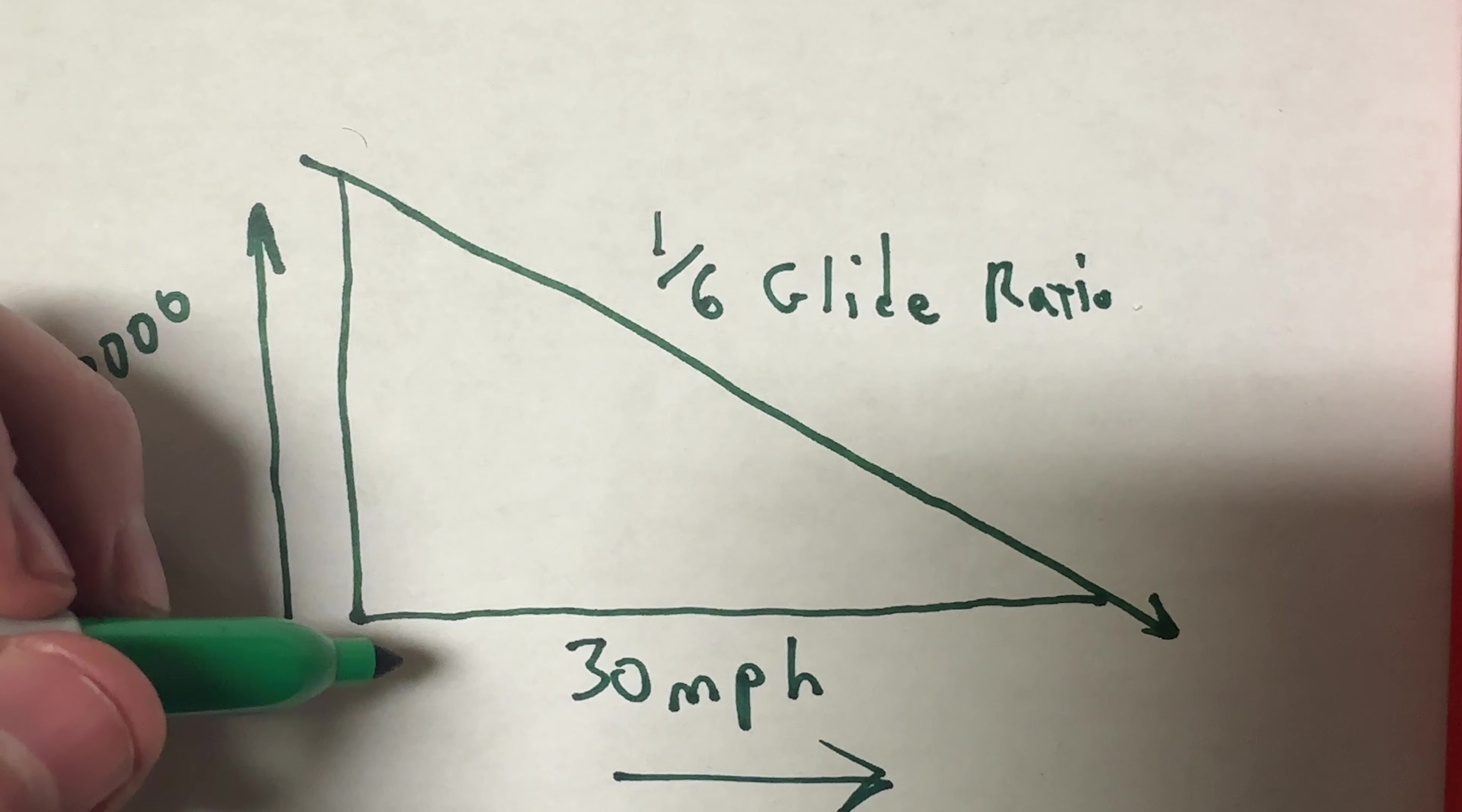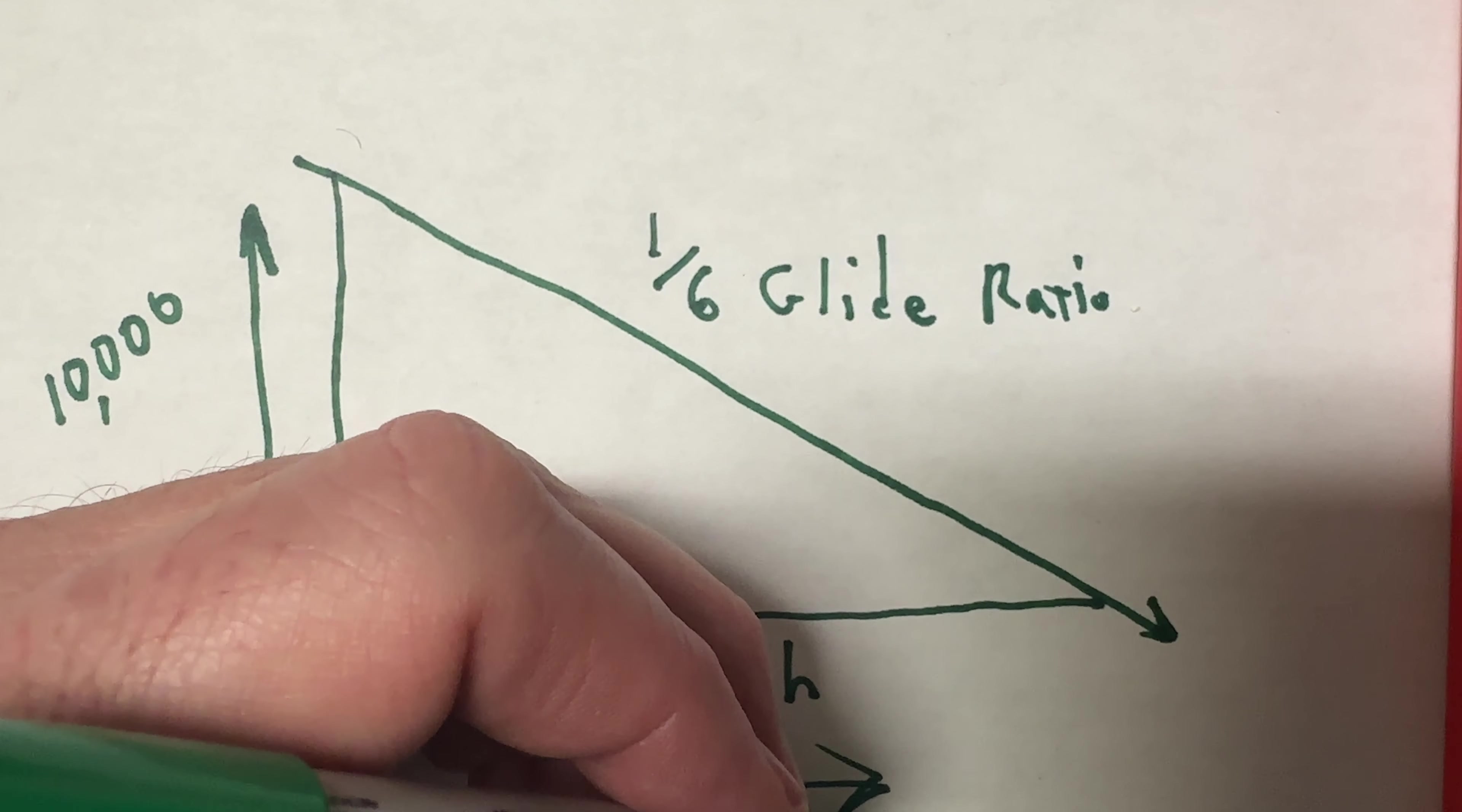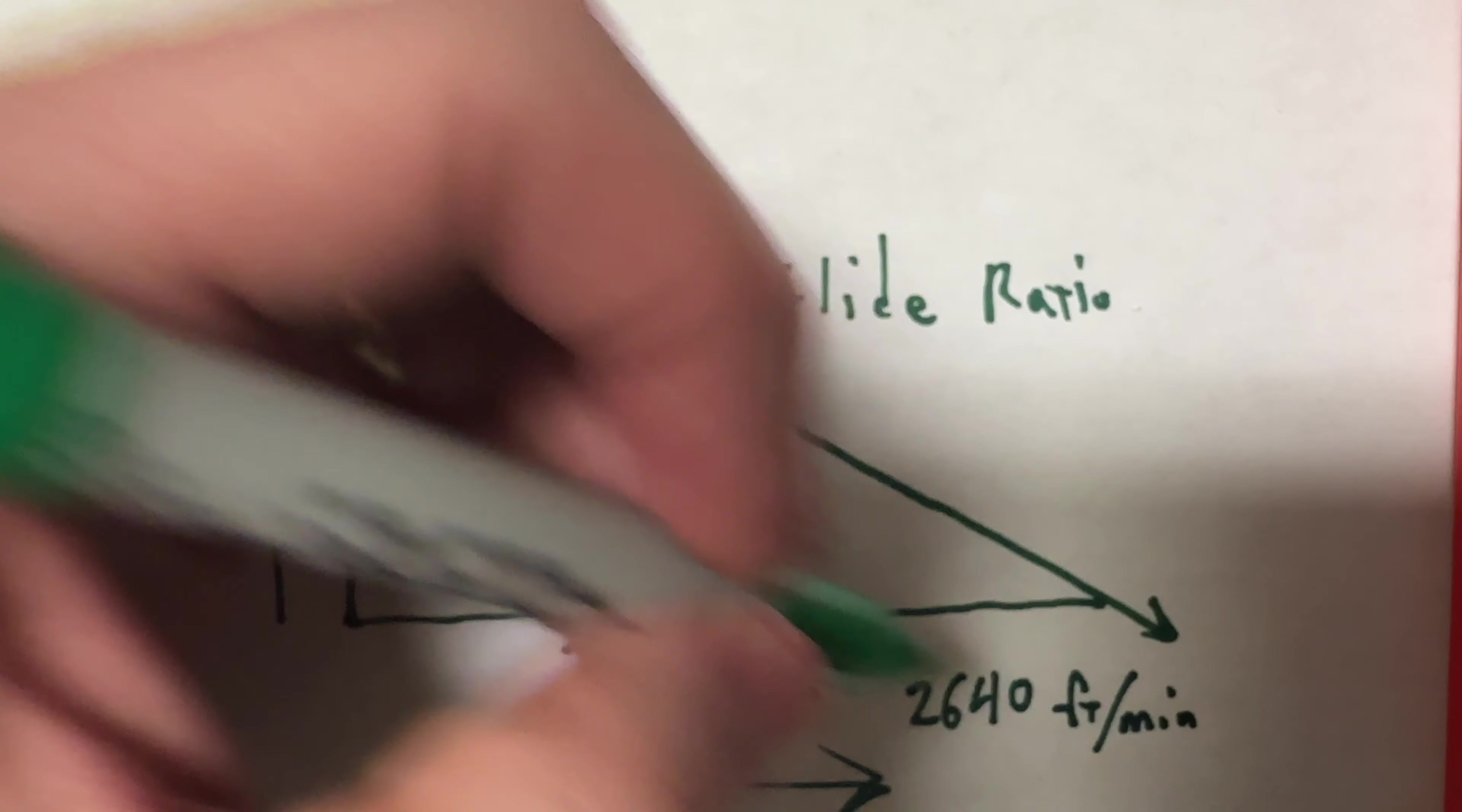then I can go about, so 30 miles per hour is about half a mile, excuse me, 0.5 mile per minute, which works out to 2640 feet per minute forward.